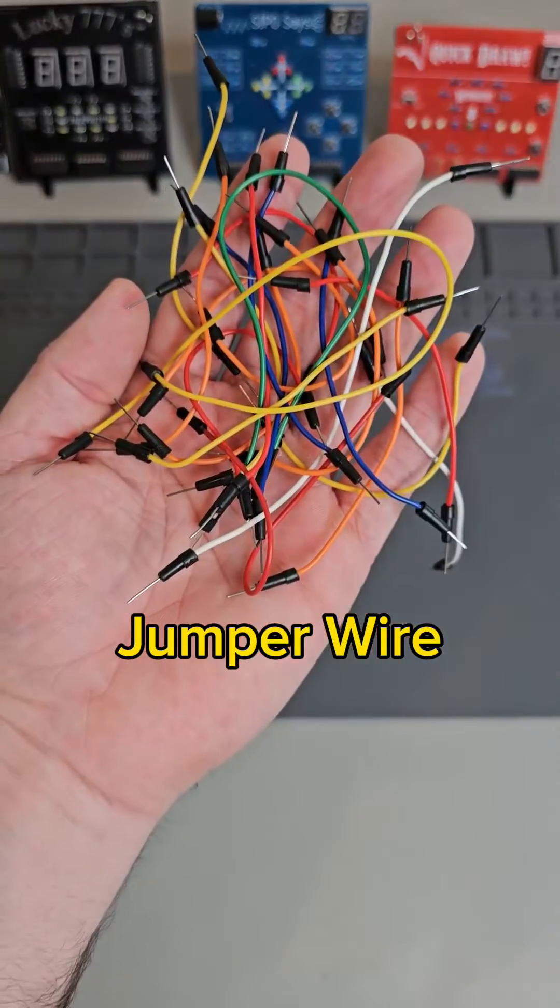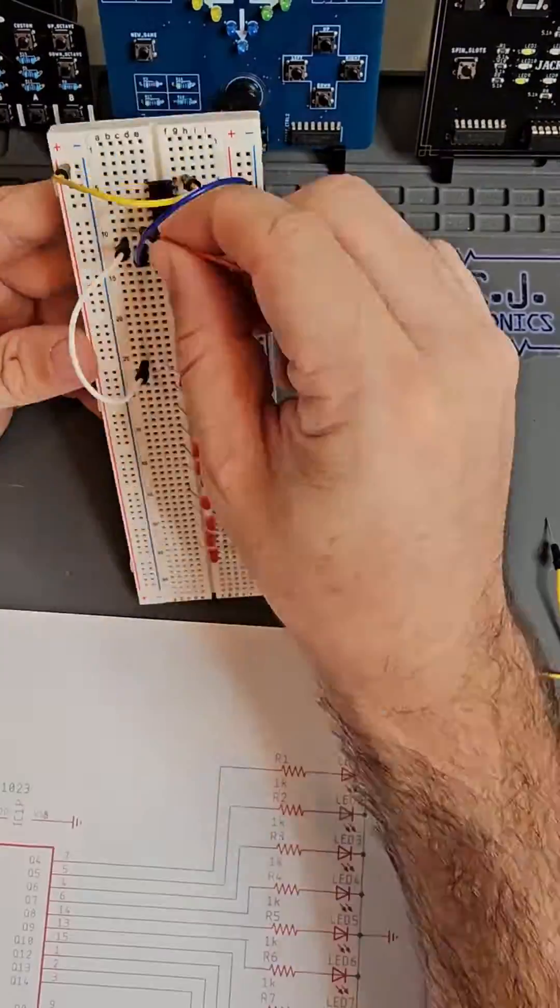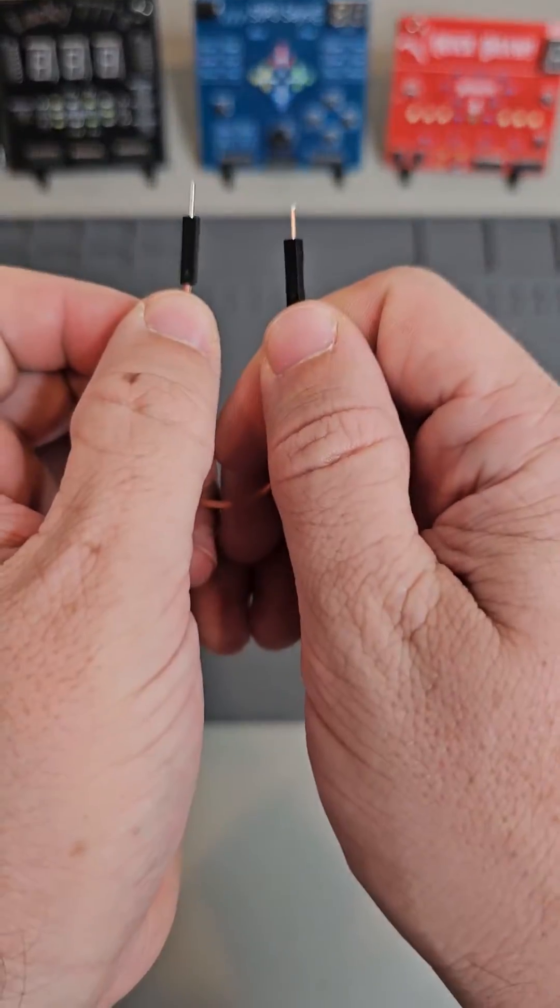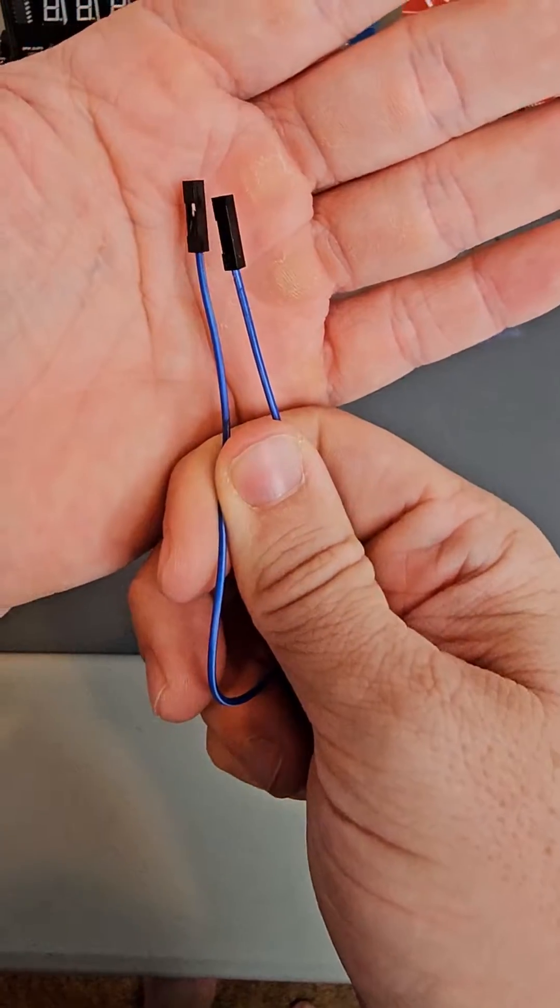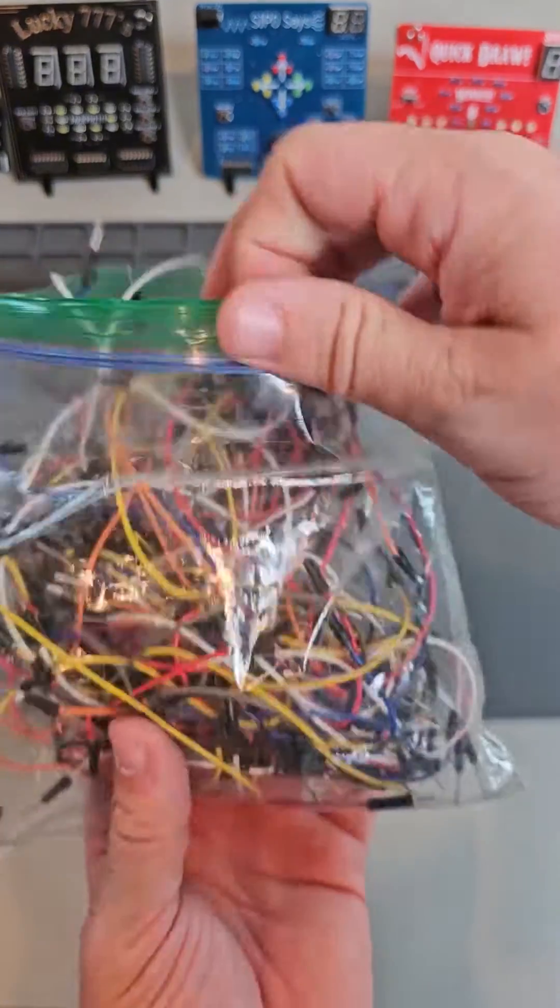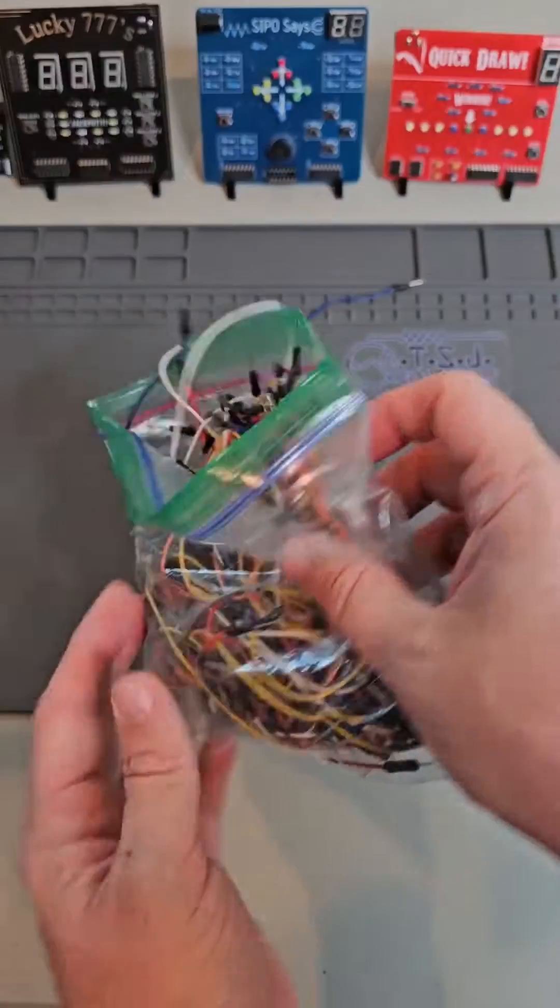We're also going to need some jumper wires. Jumper wires are used to create connections between components. They come in male to male, male to female, and female to female connection varieties. For breadboarding, you're mostly going to use the male to male connections, but it doesn't hurt to have a few of each.